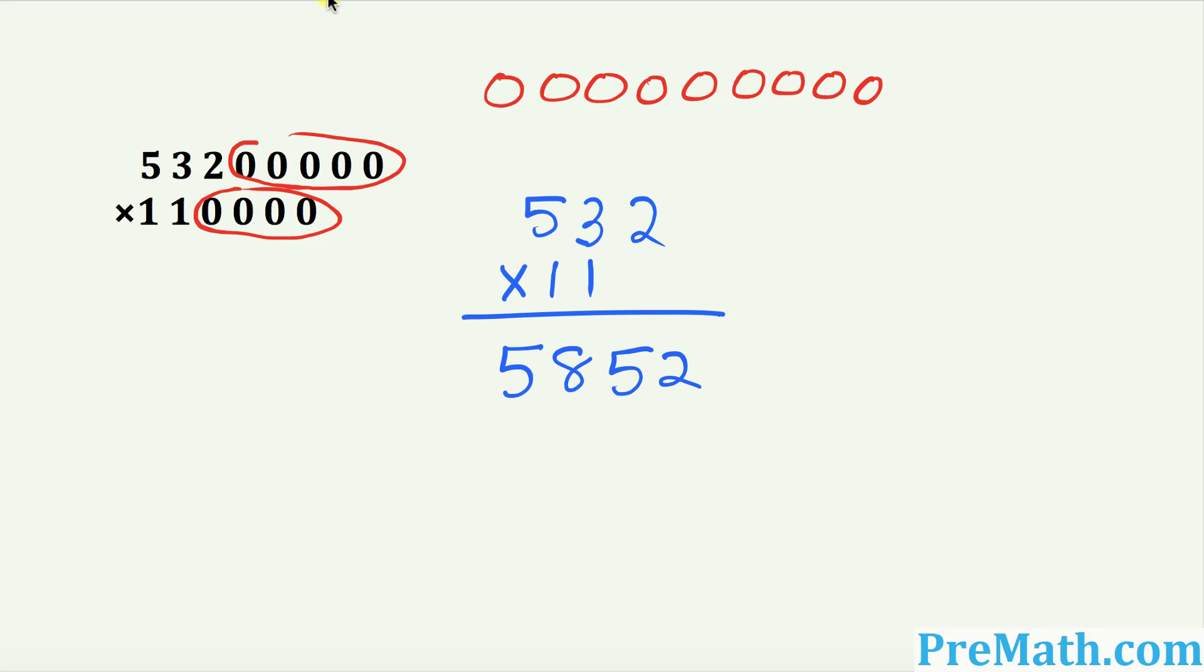Once we got this, now I want you to put all those zeros that you put away back over here. So that's going to become 1, 2, 3, 4, 5, 6, 7, 8, and 9.